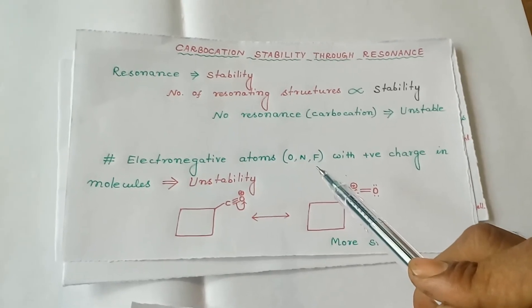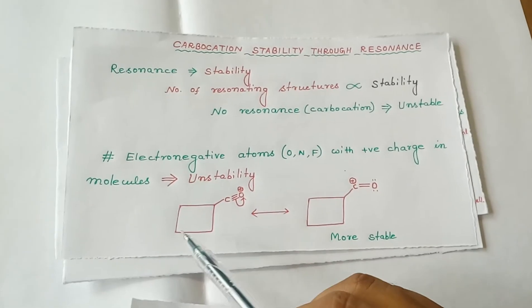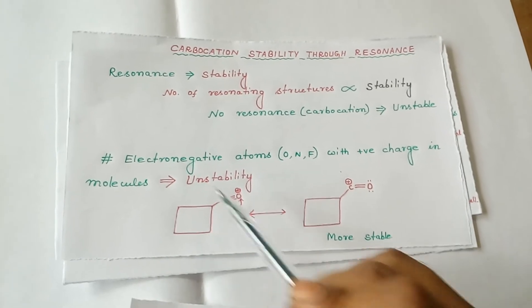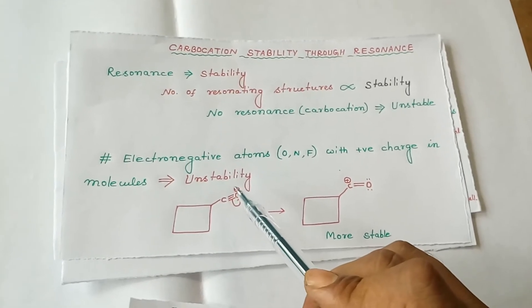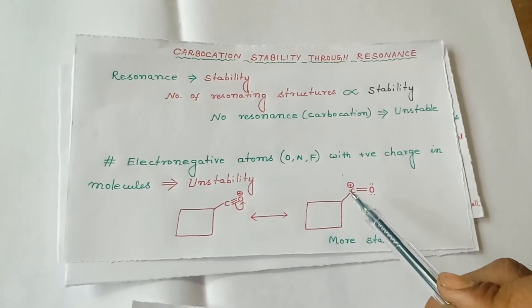Let us take an example of this molecule. Here, oxygen is positively charged. During resonance, we get structures where carbon becomes positively charged, which is more stable since carbon is less electronegative than oxygen.